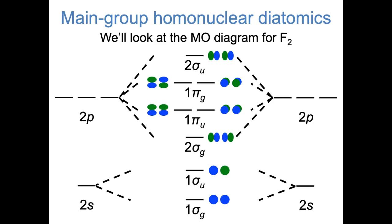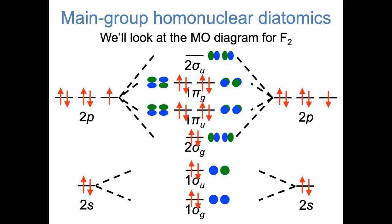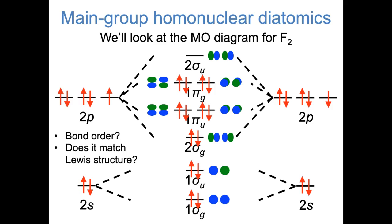The last thing we need to do is fill in the electrons. Each fluorine atom brings 7 valence electrons, giving 14 electrons total, and we fill those in from bottom to top. This is the complete molecular orbital diagram of diatomic fluorine with pictures of all the orbitals shown. To wrap up, what is the bond order of diatomic fluorine, and does it match what we expect from the Lewis structure? If you count up all the bonding and antibonding electrons, this molecule has 8 bonding electrons and 6 antibonding electrons, so the bond order is one-half times (8 minus 6), or 1 — a single bond.